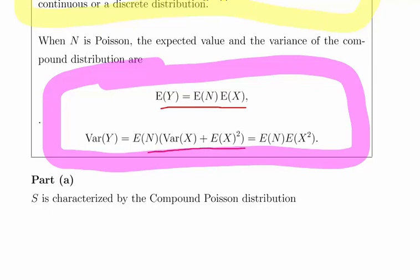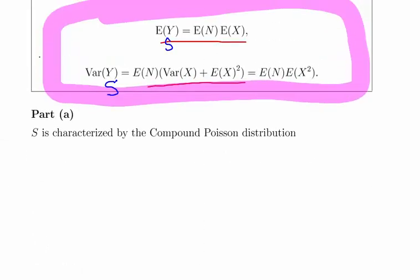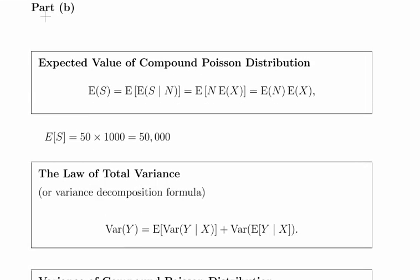This is general theory, so here what we're going to do is replace using general notation X, Y, and N. Essentially, we replace Y with S for our scenario. Otherwise, X and N are the same; they're denoting the same things. The expected value is straightforward enough, and there's a little bit of theory about it.